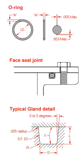The O-ring may be used in static applications or in dynamic applications where there is relative motion between the parts and the O-ring. Dynamic examples include rotating pump shafts and hydraulic cylinder pistons. O-rings are one of the most common seals used in machine design because they are inexpensive, easy to make, reliable, and have simple mounting requirements. They can seal tens of megapascals of pressure.